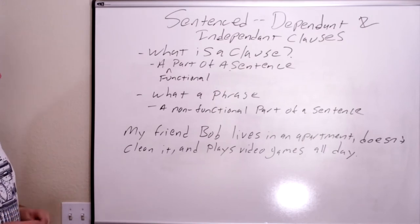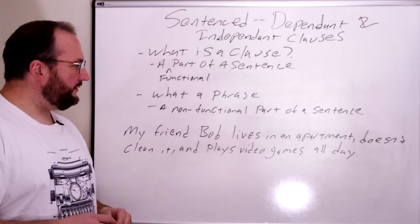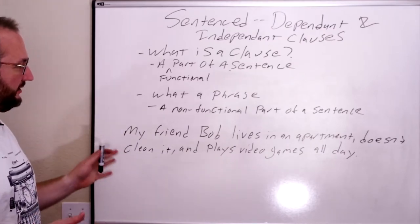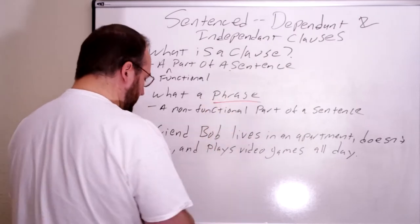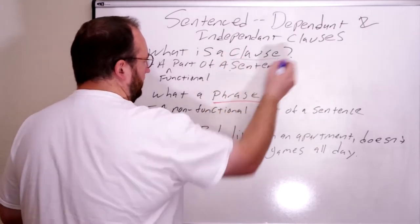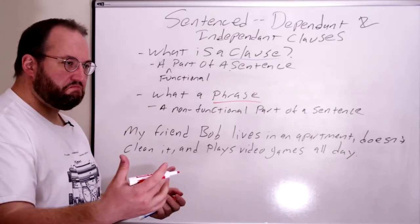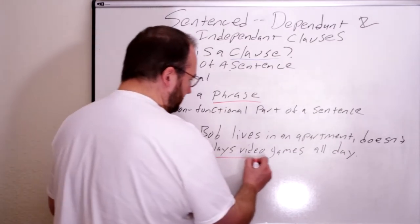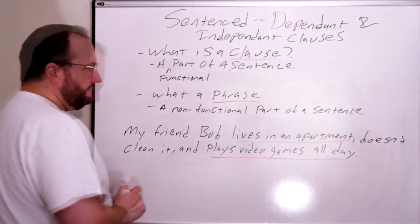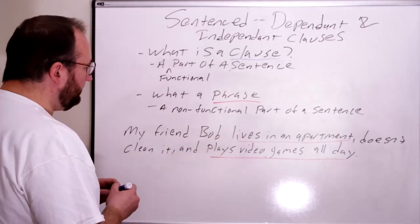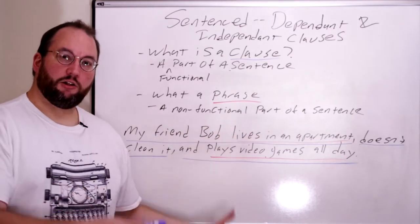Let's take a look at what that means in the context of an actual sentence: 'My friend Bob lives in an apartment, doesn't clean it, and plays video games all day.' That's a complete sentence — it describes Bob and gives you a pretty good understanding of who Bob is, and a pretty good guess at how he smells. So let's look at what part of this is a clause and what part is a phrase. A phrase is basically just a grouping of words that has a meaning. 'Plays video games all day' is a phrase. 'Lives in an apartment' is a phrase.